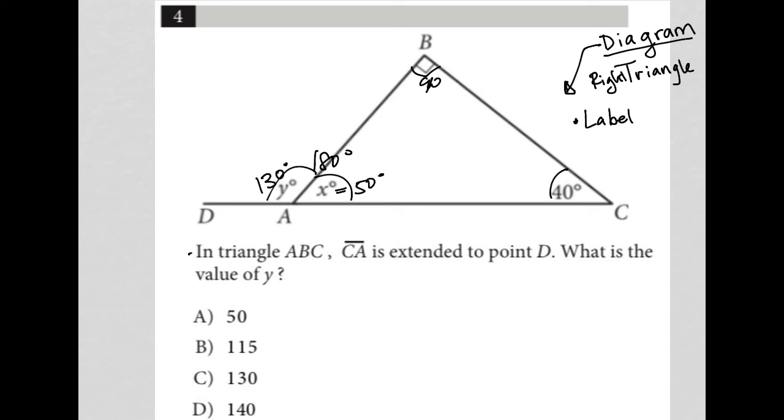The question says, in triangle ABC, CA is extended to point D, which we see. What is the value of y? Well, we already found it. It's 130, so the answer is choice C.